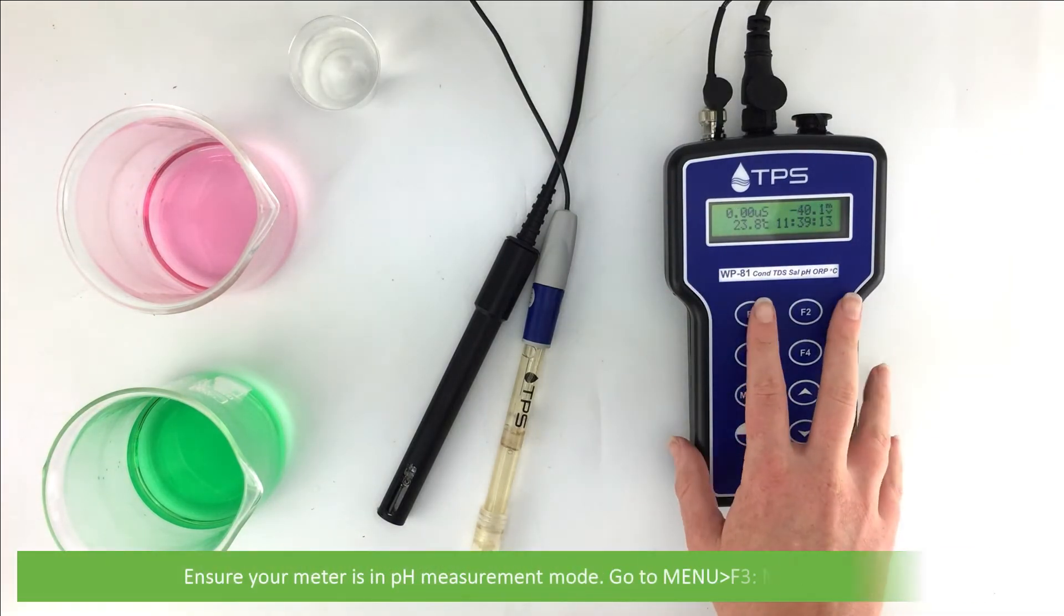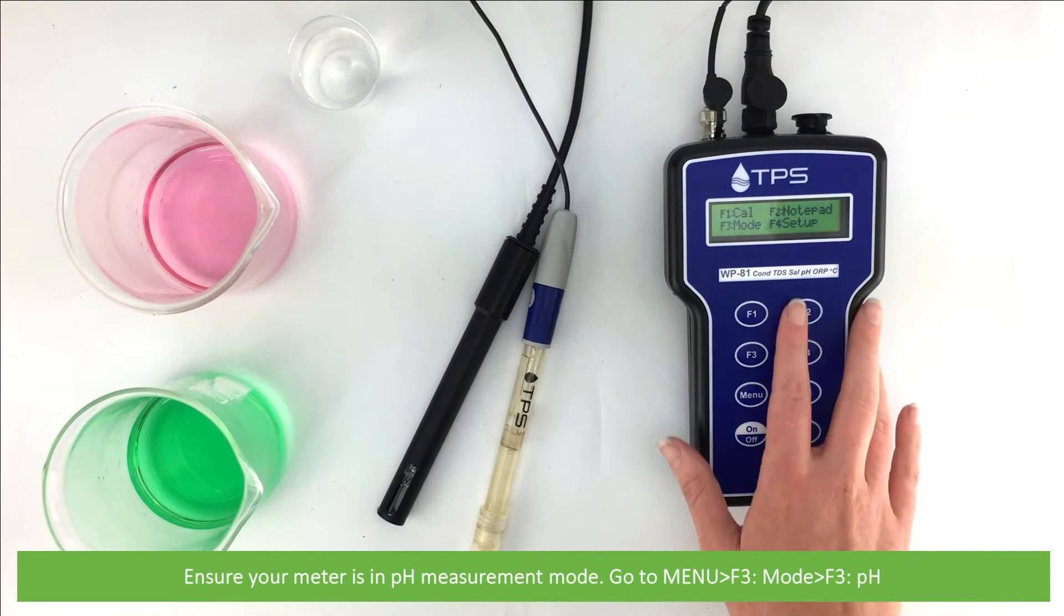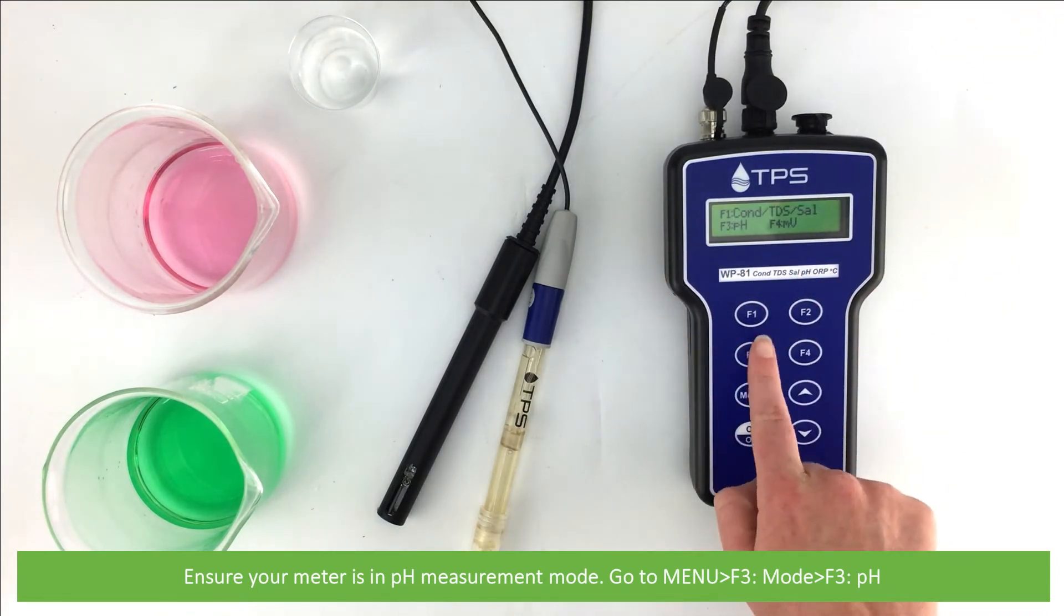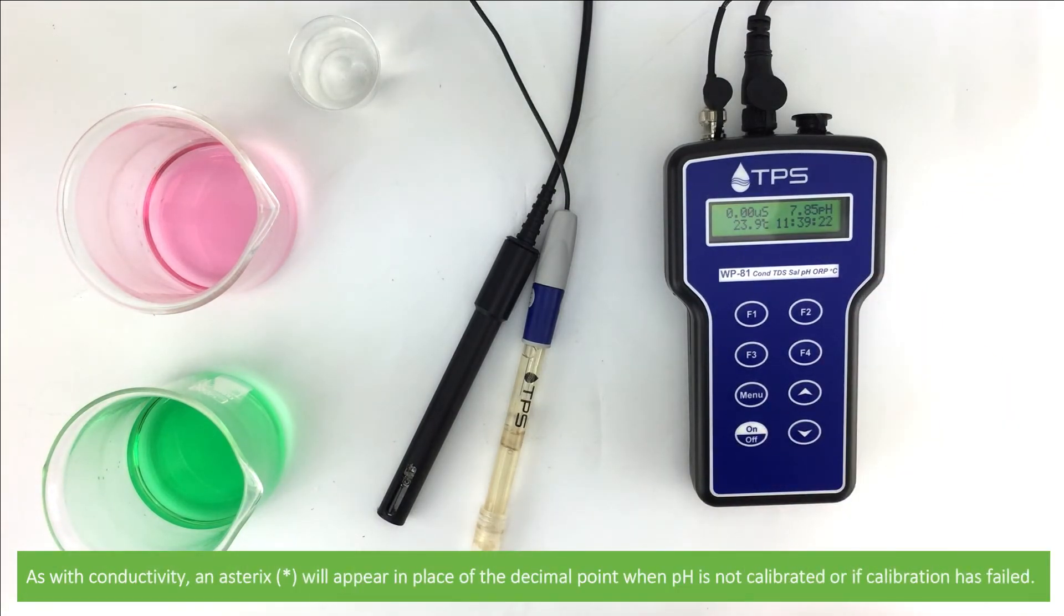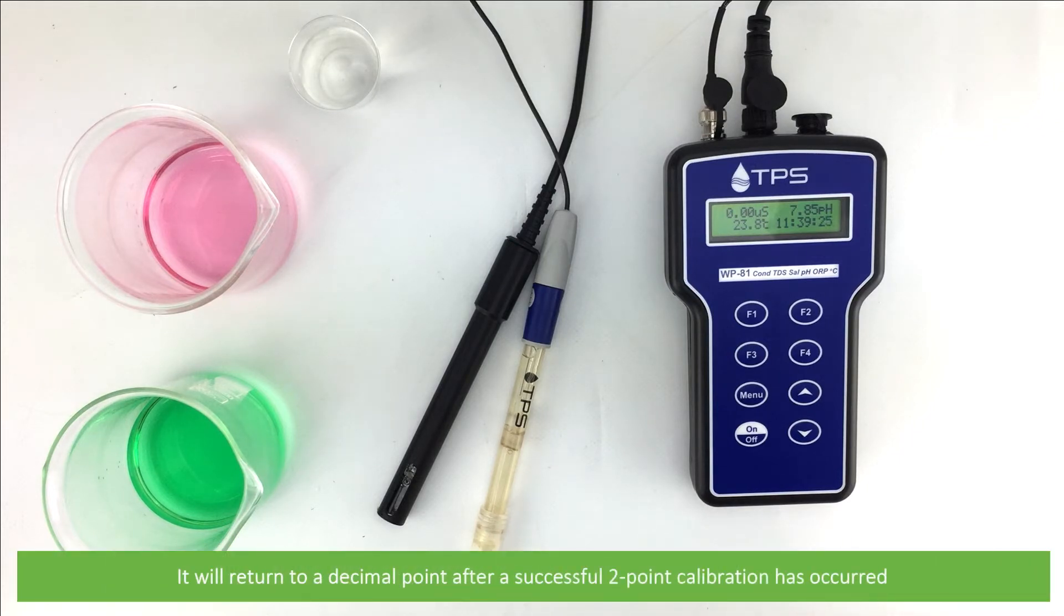Ensure your meter is in pH measurement mode. Go to menu, F3 mode, F3 pH. As with conductivity, an asterisk will appear in place of the decimal point when pH is not calibrated or if calibration has failed. It will return to a decimal point after a successful two-point calibration has occurred.